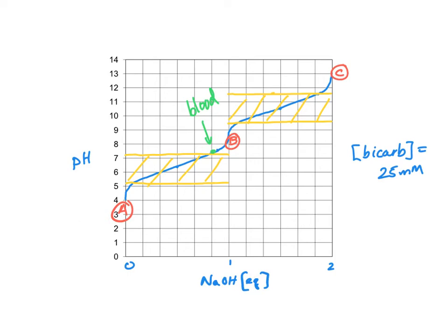In our effort to find a weak acid that will work as a buffer in blood, here's where we sit. We titrated carbonic acid and found that it is a diprotic acid.